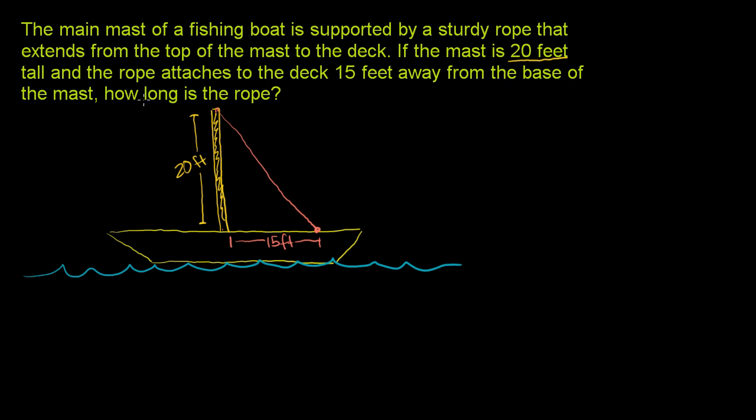And then they ask us how long is the rope? So there's a few things you might realize. We're dealing with a triangle here, and it's not any triangle. We're assuming that the mast goes straight up and that the deck is straight left and right. So this is a right triangle. This is a 90 degree angle right here. This is a right triangle. And we know that if we know two sides of a right triangle, we can always figure out the third side of a right triangle using the Pythagorean theorem.